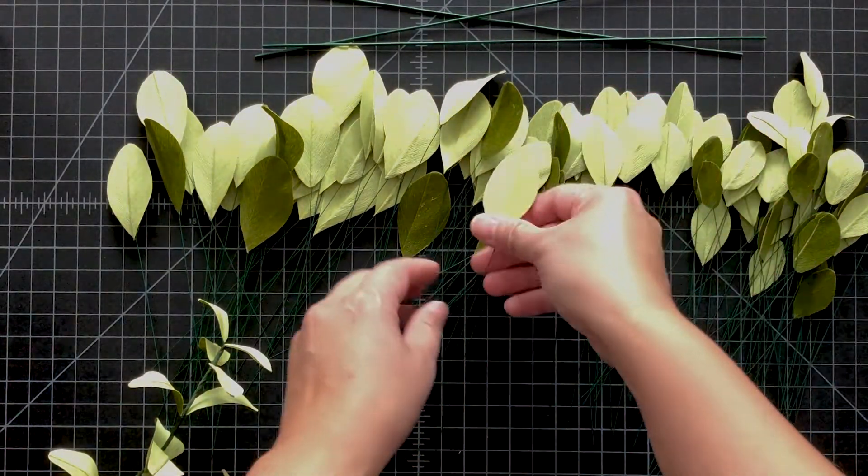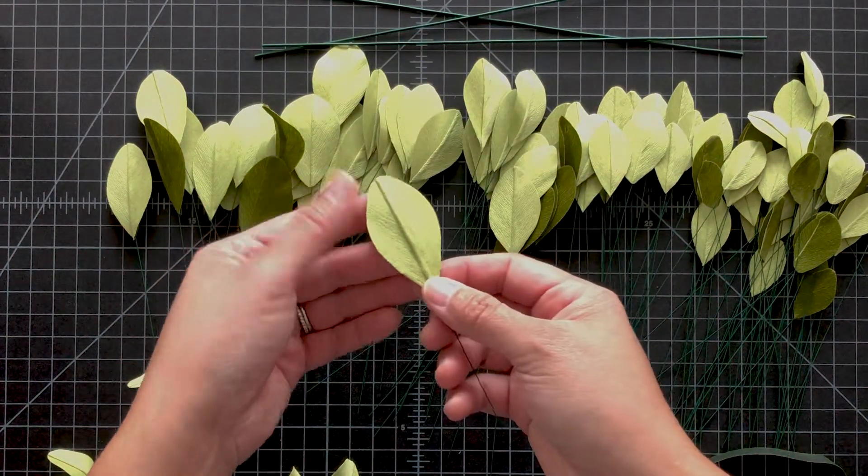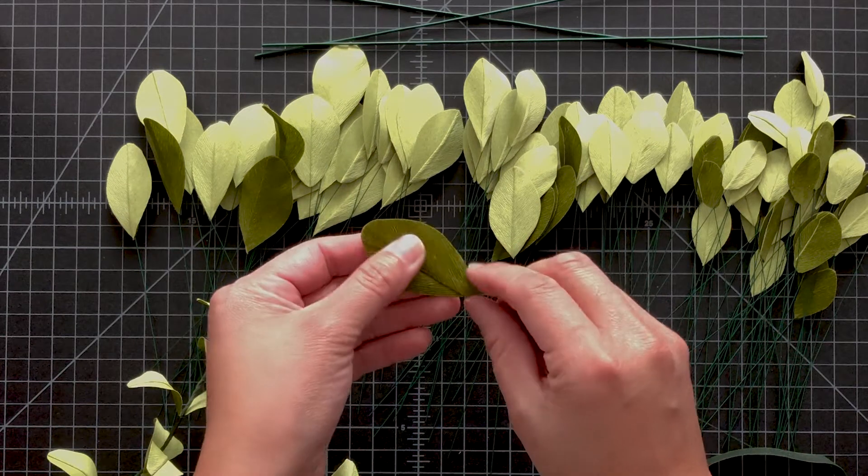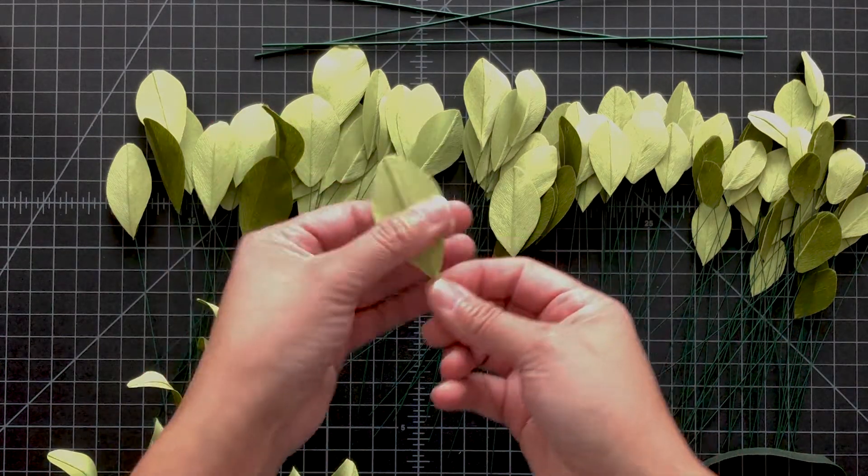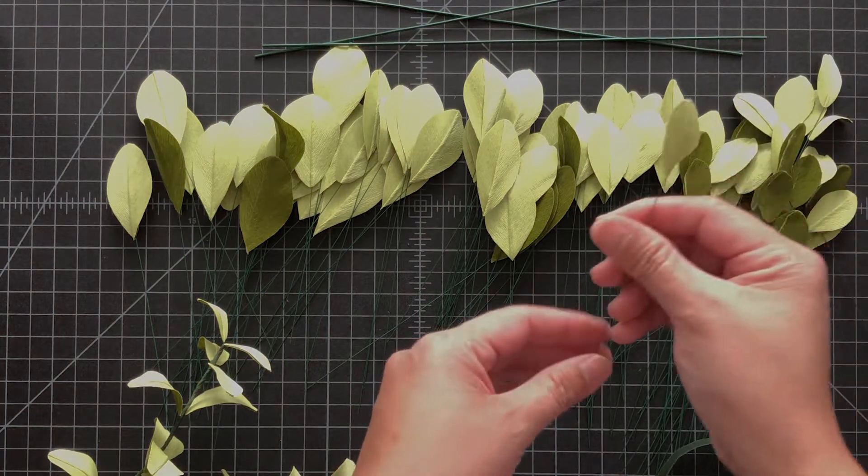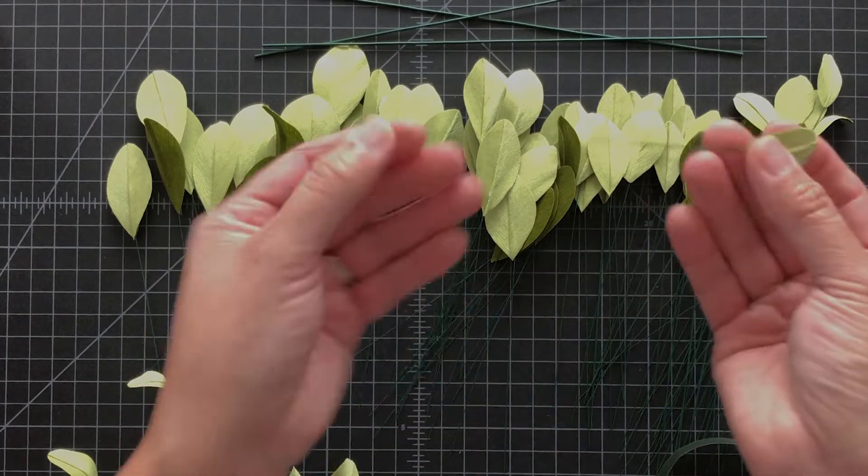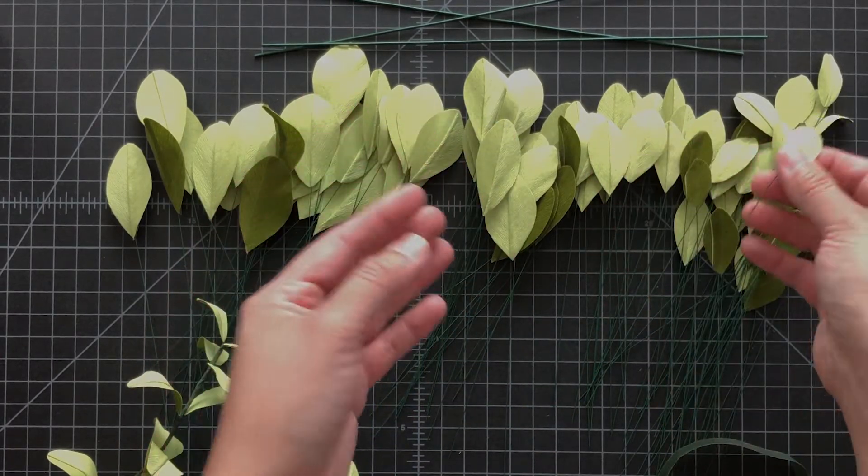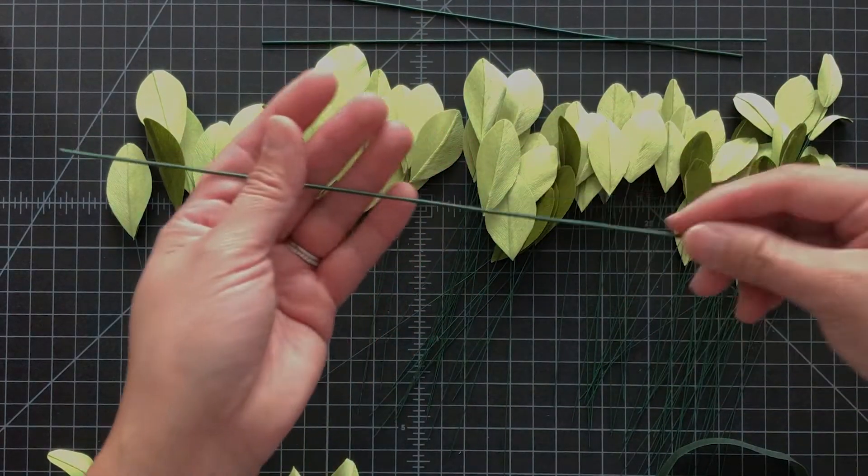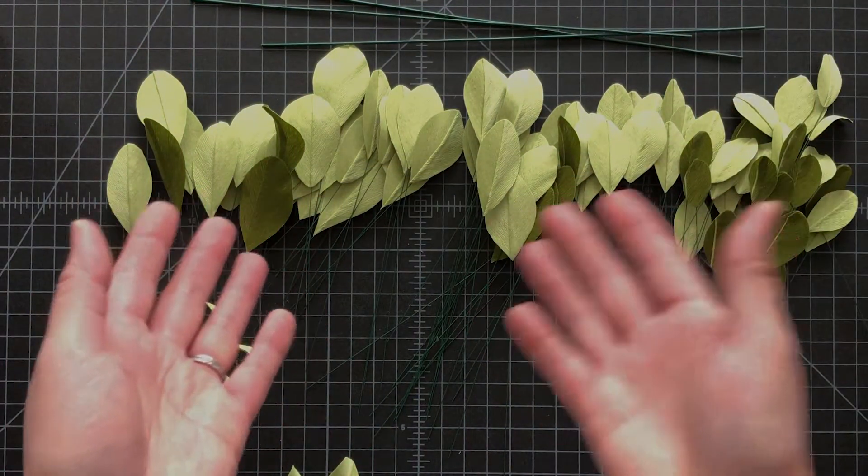You can see that the crepe paper comes in two different colors: this lighter green color and this darker mossy color. In my posy box I gave you two different wires - the 26 gauge which is really light, and the 16 gauge which is much heavier and sturdier. We're going to use both of them today.